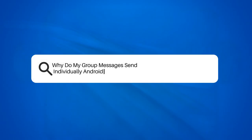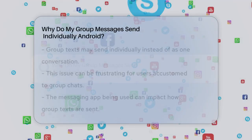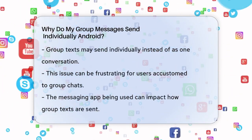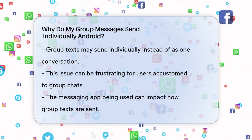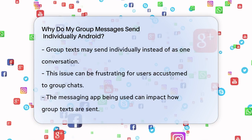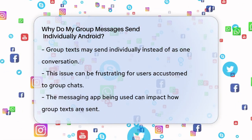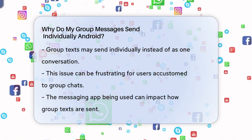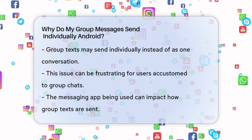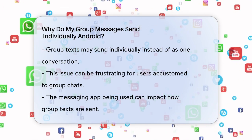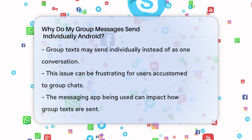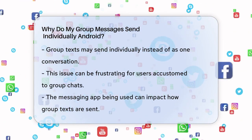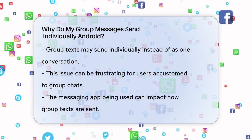Why do my group messages send individually on Android? Have you ever found yourself in a situation where you're trying to send a group text, but instead of one cohesive conversation, each message is sent individually to each recipient? This can be really frustrating, especially if you're used to the convenience of group chats.